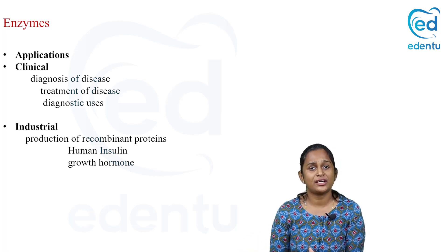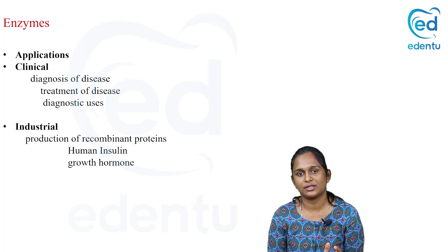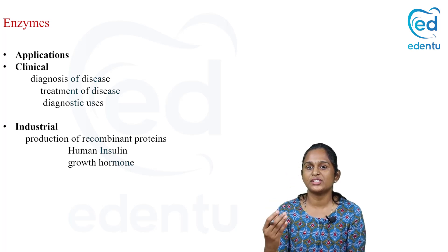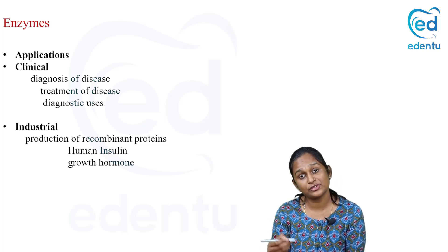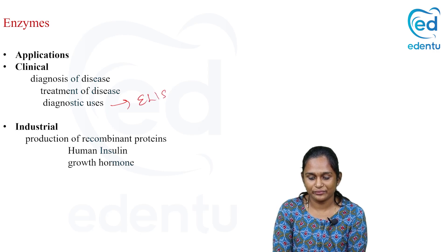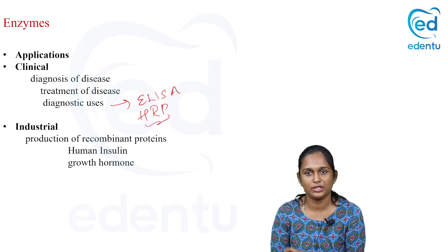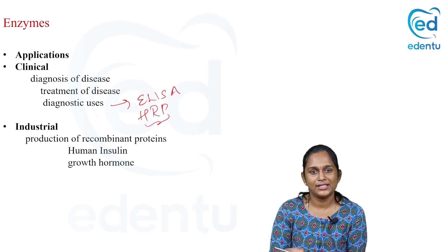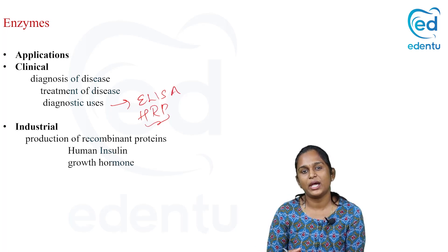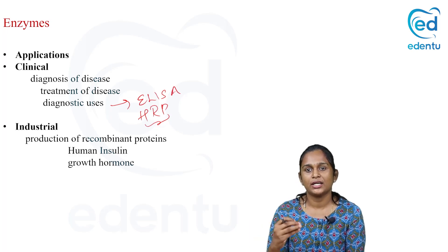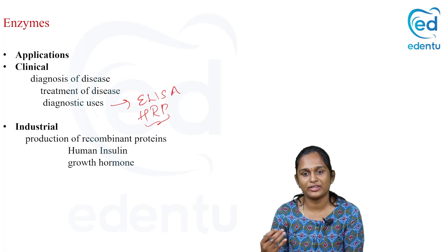What are the uses and applications of enzymes? Clinically, we can use enzymes for diagnosis and for therapeutics — for treatment. They are also used in diagnostic techniques; for example, in ELISA, horseradish peroxidase (HRP) enzyme can be used. Enzymes help in arriving at a diagnosis and in treatment of disease. Industrial uses include the production of recombinant proteins — for example, insulin and other growth hormones require enzymes in their production.